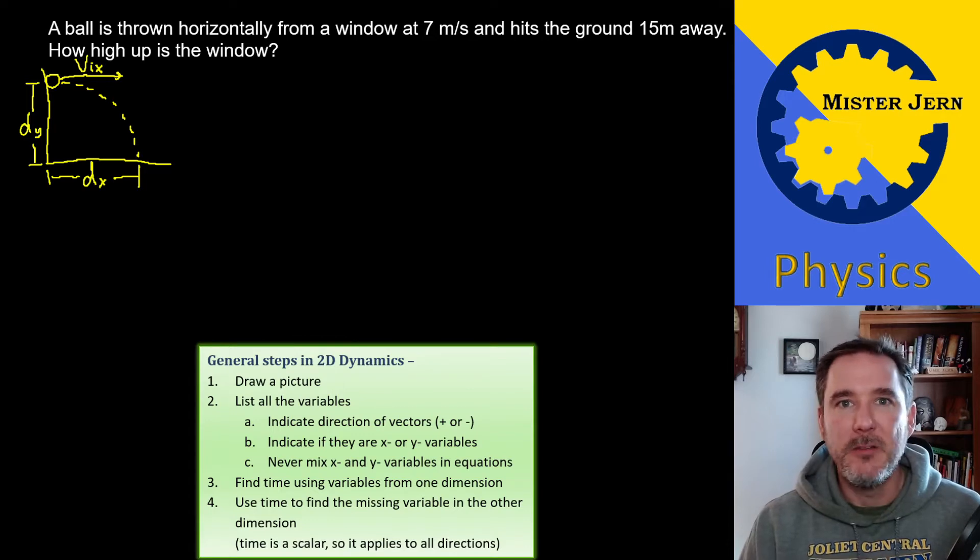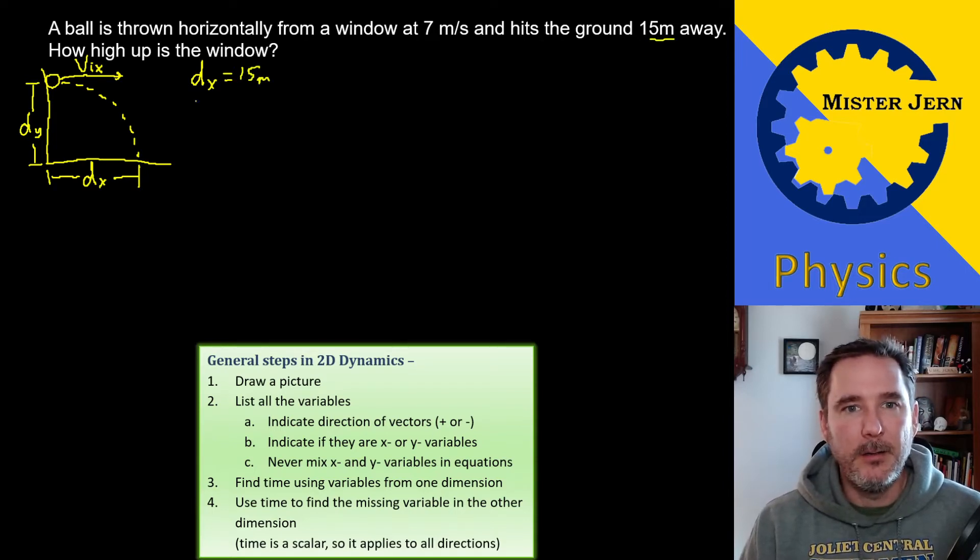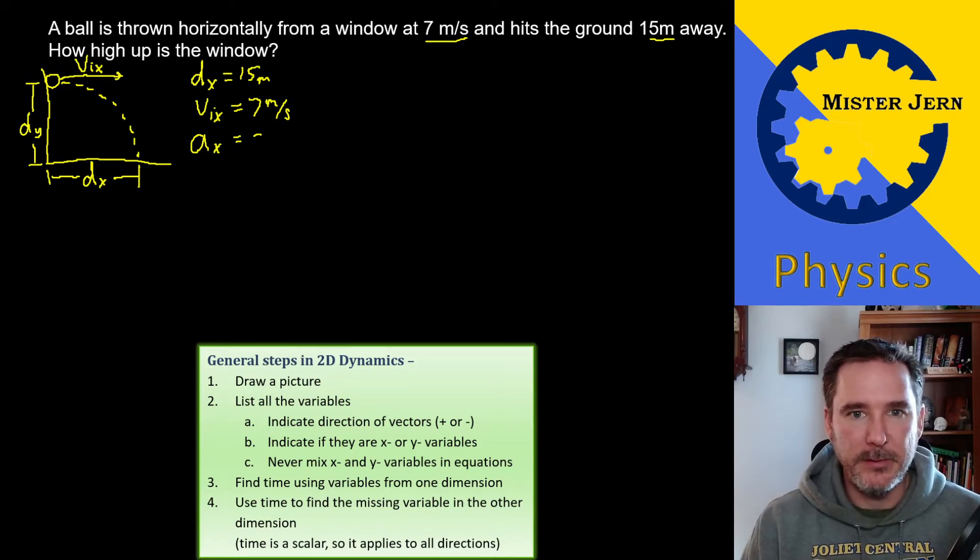So let's list our variables. I just like to list the same ones over and over again every single time. So our displacement in the x direction is given, 15 meters. Our initial velocity in the x direction is also given, 7 meters per second. Moving to the right so we'll keep them positive. Our acceleration in the x direction, well there's nothing pushing it, we're ignoring air resistance, so it's 0 meters per second squared.